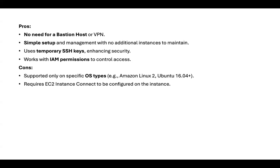I recommend going through the hands-on video to see how the EC2 Instance Connect Endpoint works — you can add it during the launch of an EC2 instance or install the package later on an existing instance. Both options are available. In terms of cons, it only supports specific OS types: Amazon Linux 2, Linux 3, Ubuntu 16.04 and above. For existing instances, you need to install the package and add the endpoint.